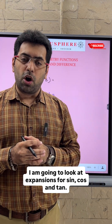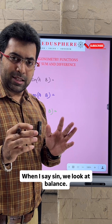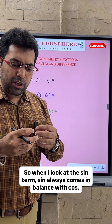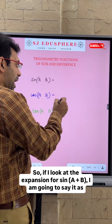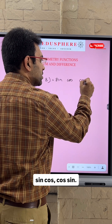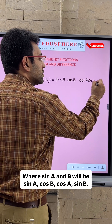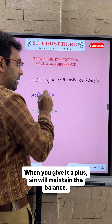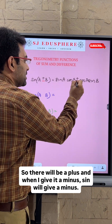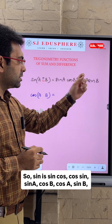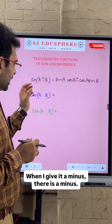Today I am going to look at expansions for sine, cos, and tan. When I say sine, it always comes balanced with cos. So for sine (a + b), it expands as: sine a cos b + cos a sine b. When I give it a plus, sine maintains the balance with a plus, and when I give it a minus, sine gives a minus: sine a cos b − cos a sine b.